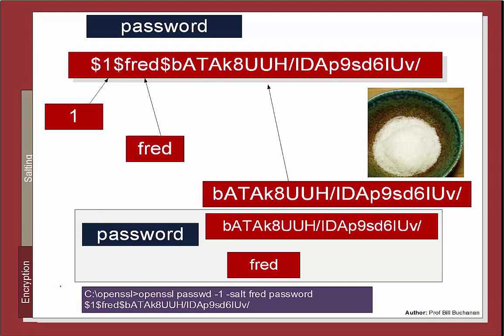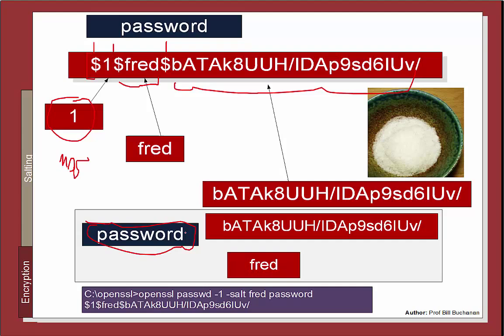Here's an example. When we store a password, we store it in a form delimited by dollar signs. The first element tells us the hashing method — in this case MD5. The second element defines the salt we're going to use, and the third defines the hashed value including the salt. We take the salt and the password — here 'Fred' as our salt and 'password' as the password — and it produces this hashed value. We store it along with the salt and the algorithm used.